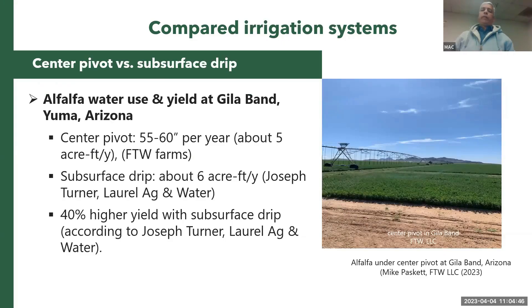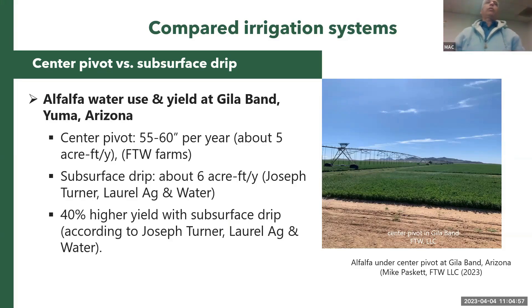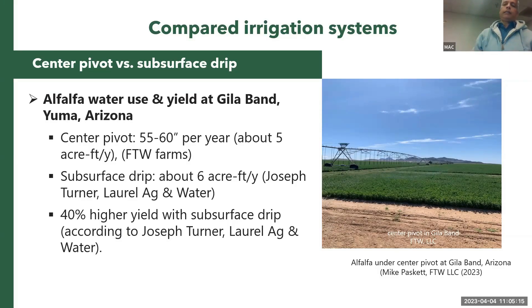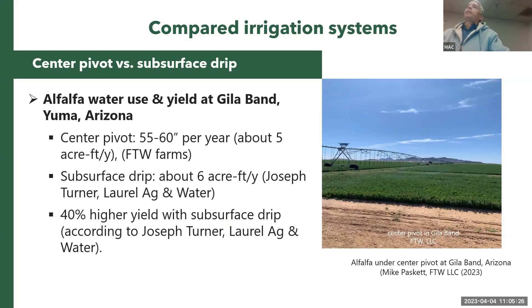From fields visited in Maricopa, these systems record the amount of water applied and can generate monthly or seasonal reports. Under sprinkler or center pivot, you can apply five acre-feet per year for alfalfa and achieve the same yield as flood irrigation, which typically uses far more. Fields entirely under subsurface drip apply about six acre-feet per year and get 40% higher yield than flood irrigation.